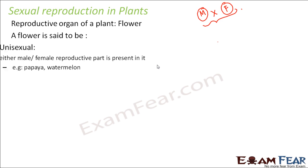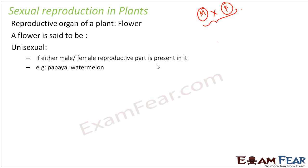A flower is said to be unisexual if either the male or female reproductive part is present in it. The male and female reproductive parts are different — the male reproductive part produces the male sex cell and the female reproductive part produces the female sex cell. These two cells then fuse together to form the new plant.